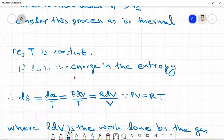During the isothermal process, we can write dq is equal to PdV. So ds equals PdV by T. Since PV is equal to RT, then P by T we can write as R by V dV.